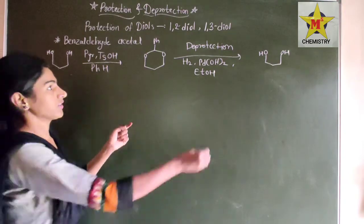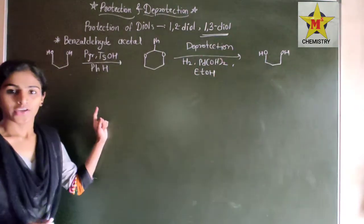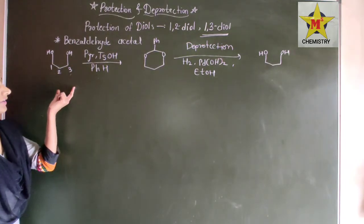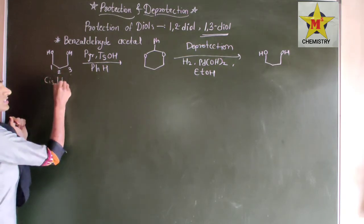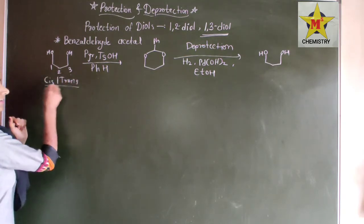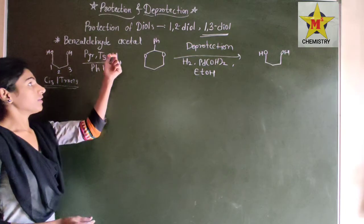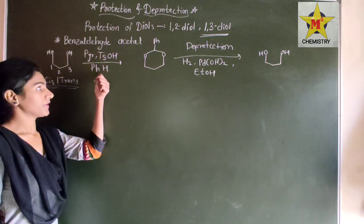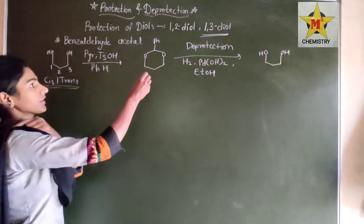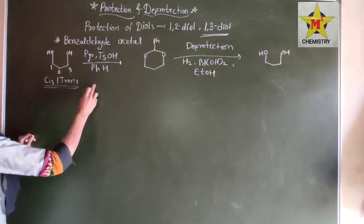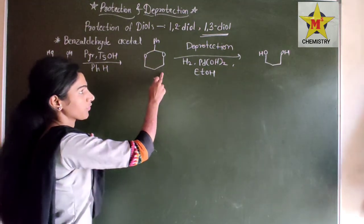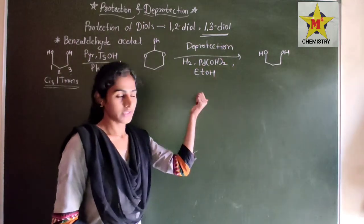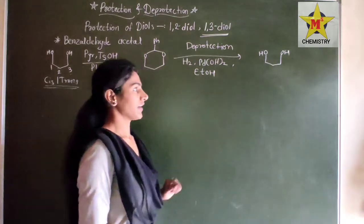Now for one-three diol protection, both cis and trans diols can be protected using PhCHO in H+. Both dials get protected. Deprotection is carried out in presence of H2, Pd(OH)2 in presence of ethanol. This one-three diol is then deprotected.